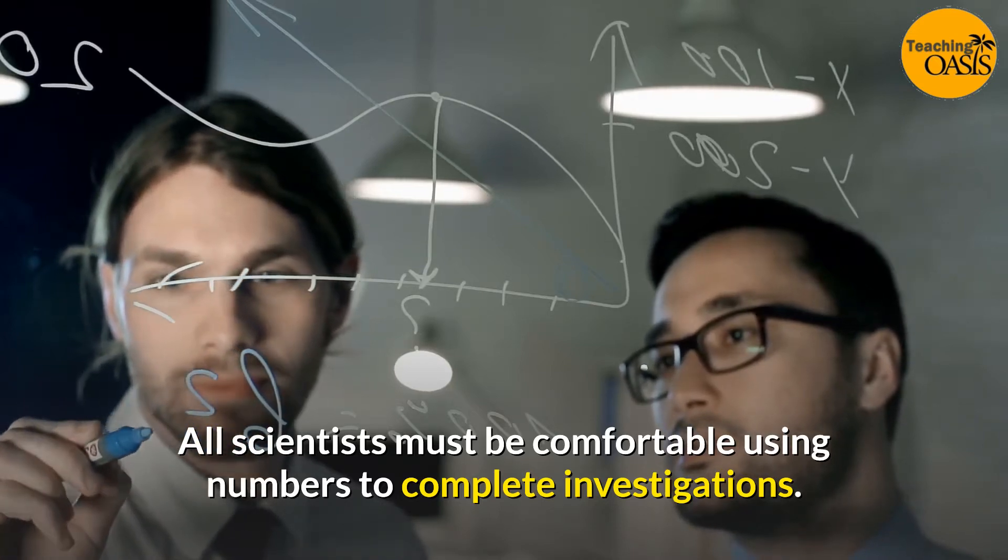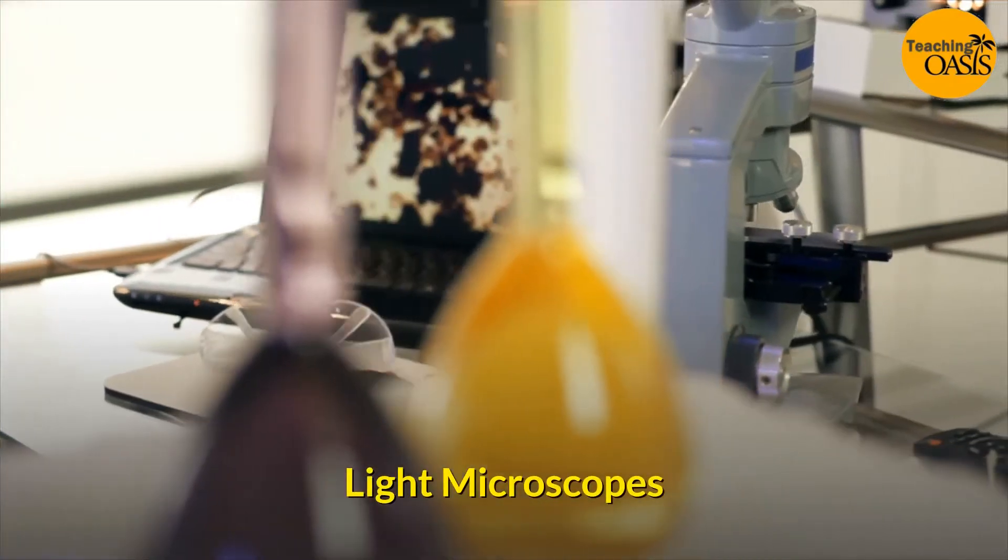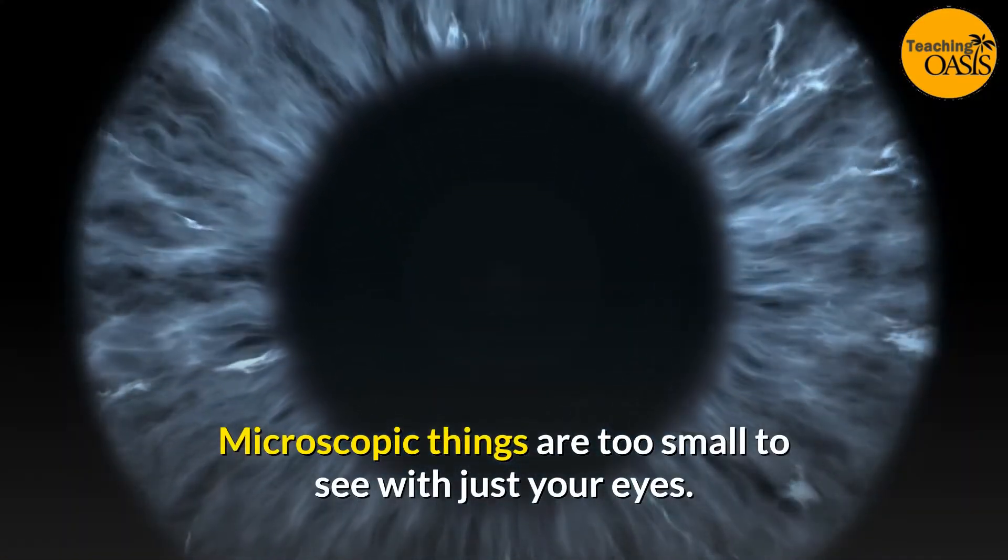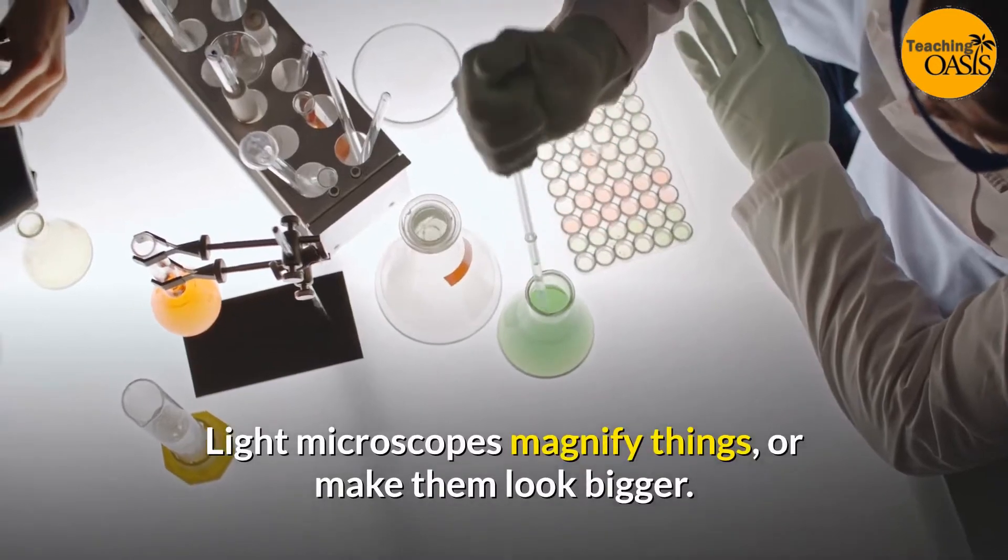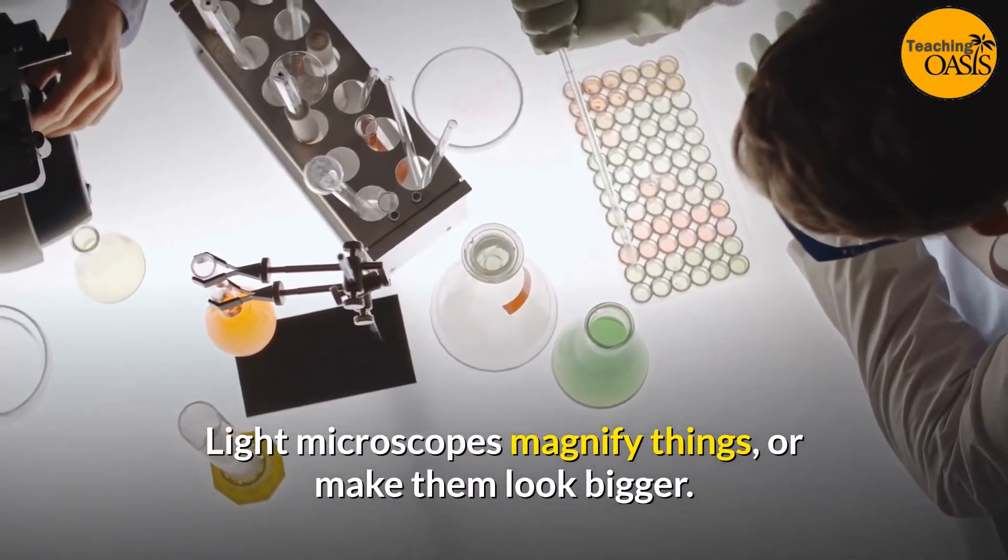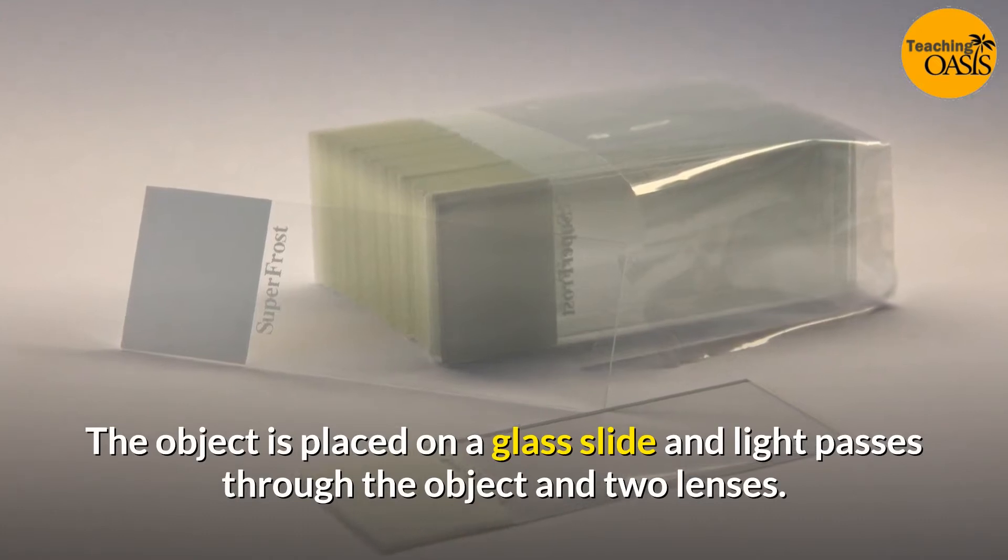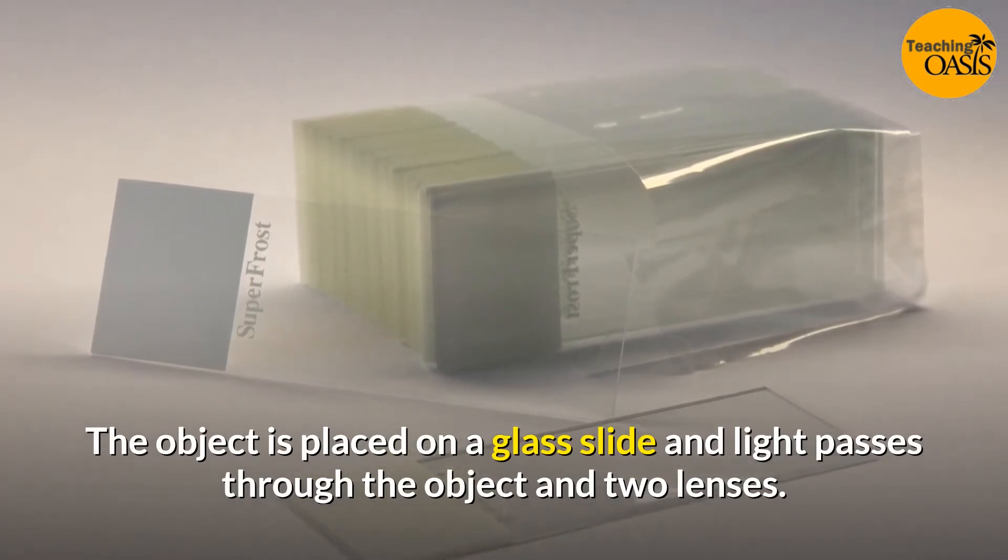Light microscopes: Microscopic things are too small to see with just your eyes. Light microscopes magnify things or make them look bigger. The object is placed on a glass slide and light passes through the object and two lenses. The eyepiece helps to focus the image.